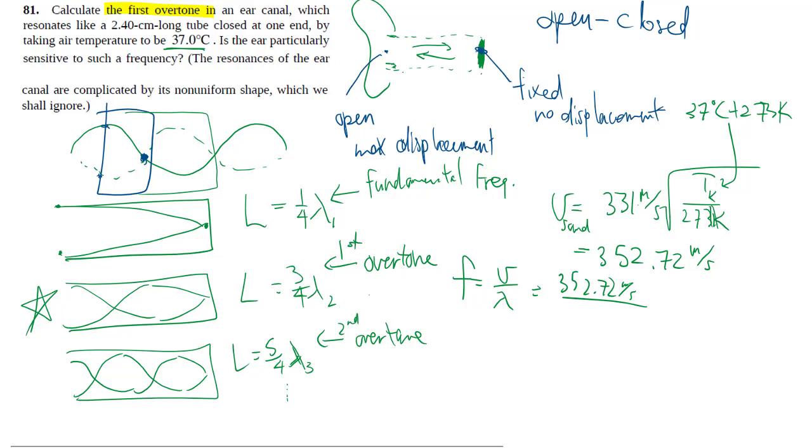My lambda here, solving, is going to be 4 over 3L. So that's 4 over 3 times 2.4 centimeters, which we make into meters to get per second in the end, or 11 kilohertz.